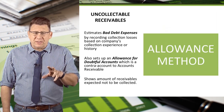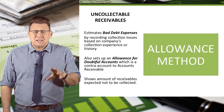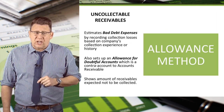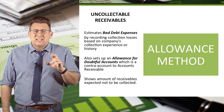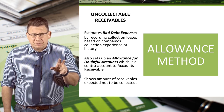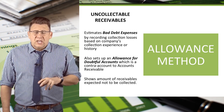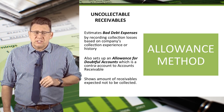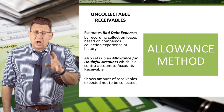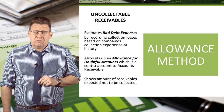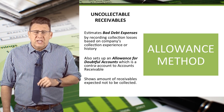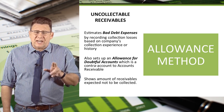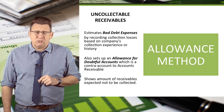The allowance method estimates bad debt expense by recording collection losses based on a company's collection experience or history. It also sets up an allowance for doubtful accounts, which is a contra account to accounts receivable. It represents the amount of receivables not expected to be collected in cash.